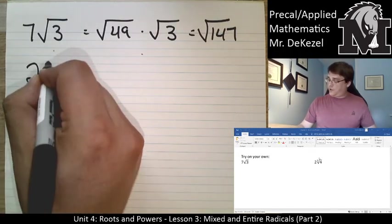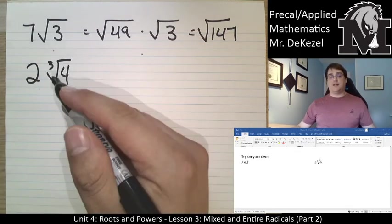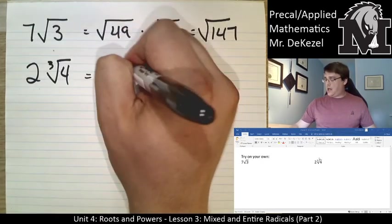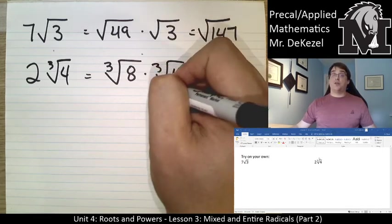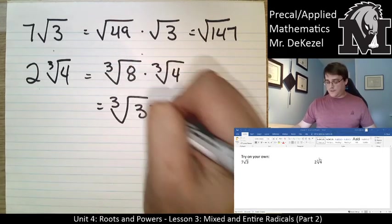If we have 2 cube roots of 4, what number do I need to cube root to get 2? That would be 8. So I would cube root 8 and multiply it by the cube root of 4. That is 32. This would give us the cube root of 32.